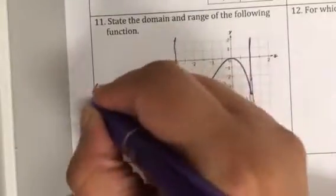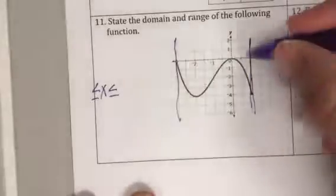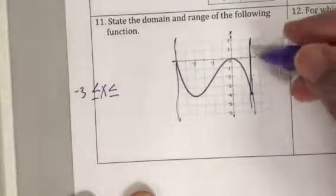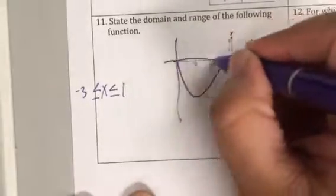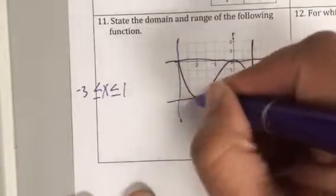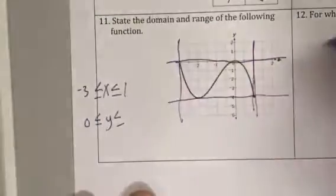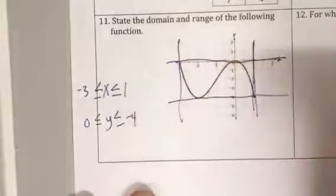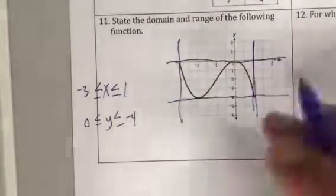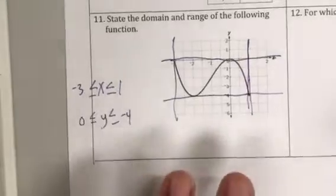So x started off like this. We have -3 and 1. And then your y-intercept goes this direction. So you have 0 and -4. You just draw your lines, tell me what the numbers are, and call it a day.